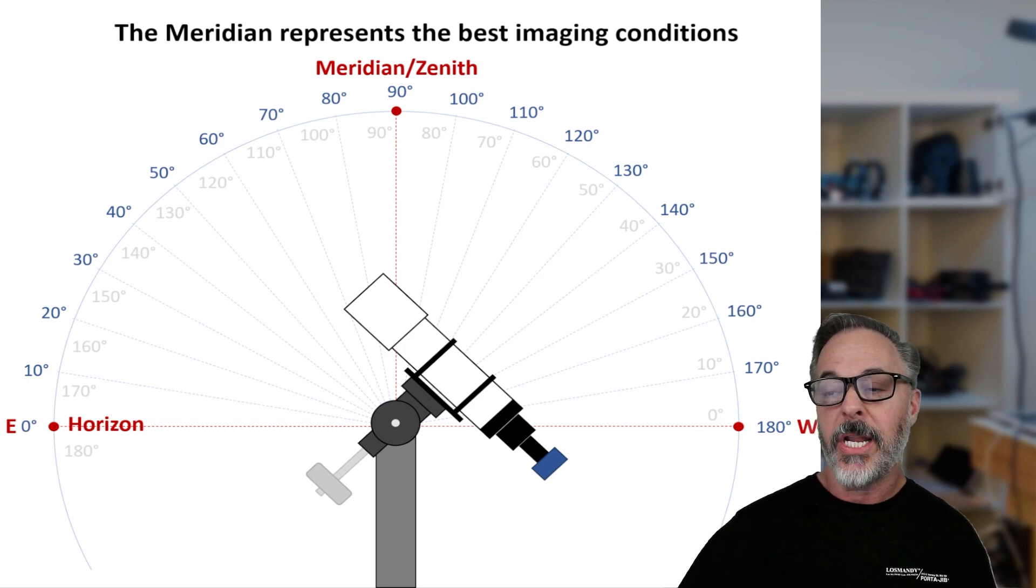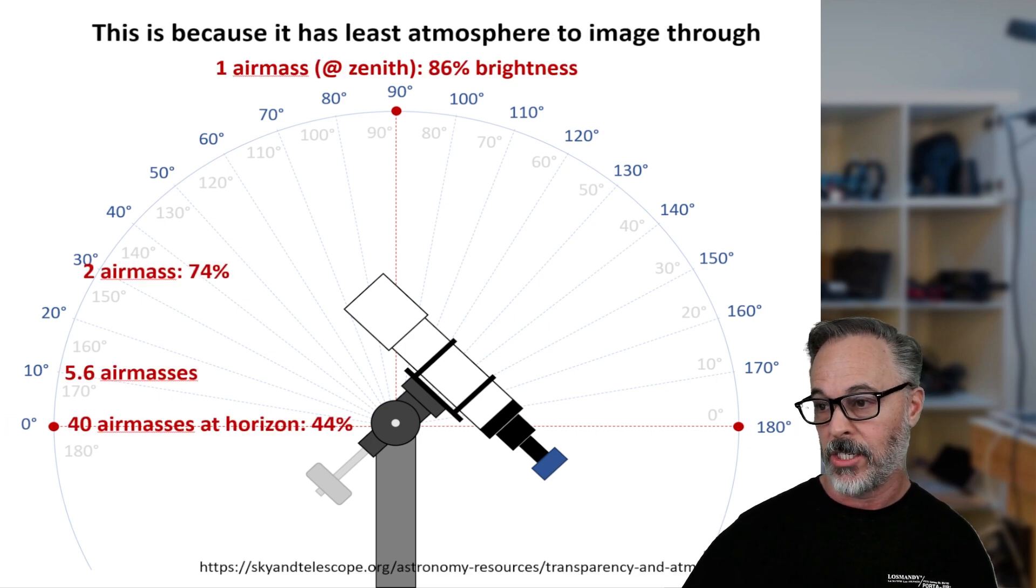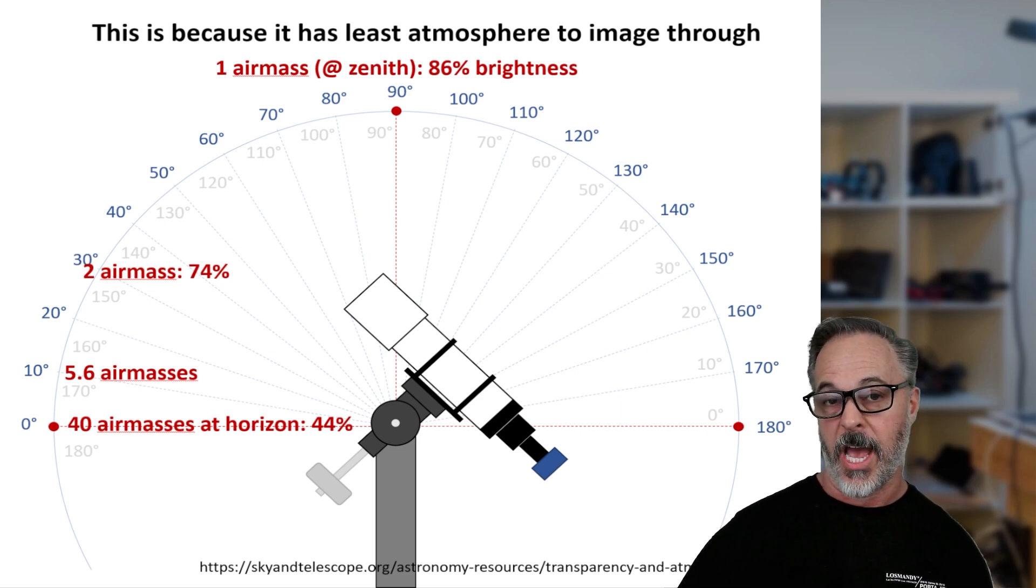These are just two references that we're going to revisit about how to set the limits in your Gemini. But we're going to use those right now to explain what's going on. So the Meridian represents really the best imaging conditions. And why is that?